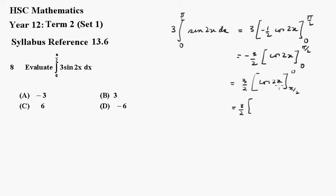So now cos of 0 is 1 but the cos of... This is going to be minus the cos of pi, which is minus 1. Minus 1. Which gives me 3 over 2 times 2. Which gives me the result of 3.